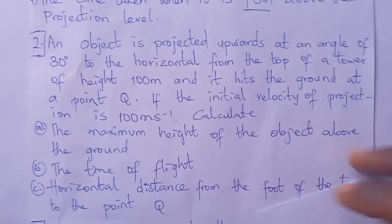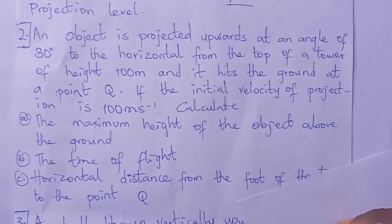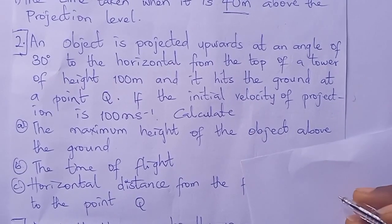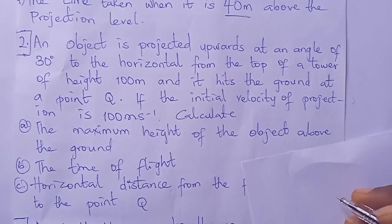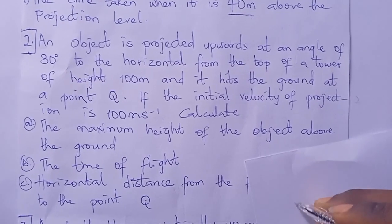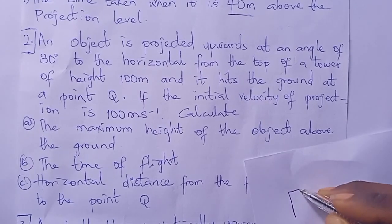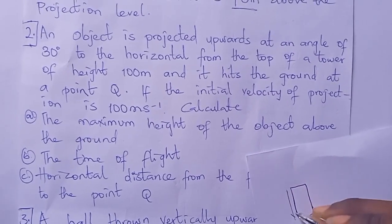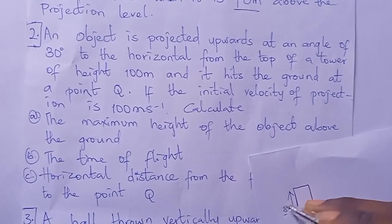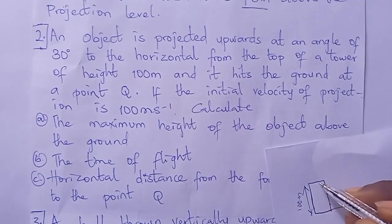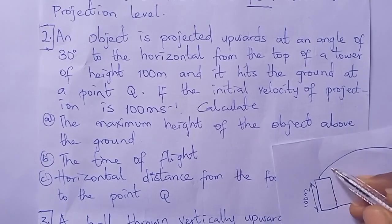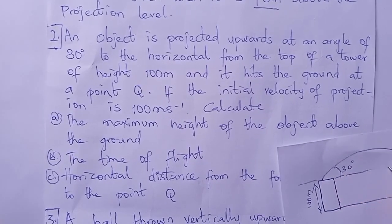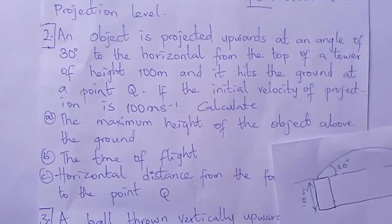First of all, what I'm checking for every projectile problem is what case it is. It is projected from the top of a tower at an angle, so it's like case 2 projectile if you followed my earlier videos. So this is the tower, the height is 100 meters. The object is projected at 30 degrees, then it hits the ground.